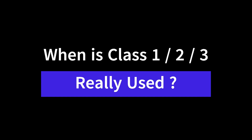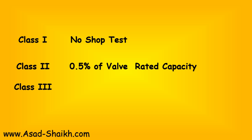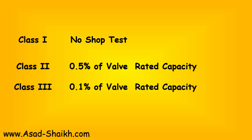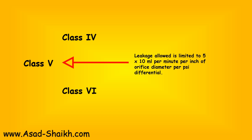Classes 1, 2, and 3 are less commonly used. Class 1 means no shop testing is required. Class 2 allows 0.5% of rated valve capacity leakage, and class 3 allows 0.1% — both tested at around 3 to 4 bar differential pressure in the shop. These are typically associated with double-port control valves, which inherently have higher leakage rates. Class 5 sits between class 4 and 6: leakage rate is 5 × 10⁻⁴ mL per minute per inch of orifice diameter per PSI of differential pressure, and it can be achieved even with a metal-to-metal seat.